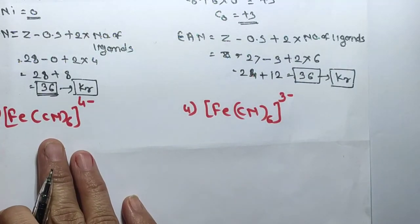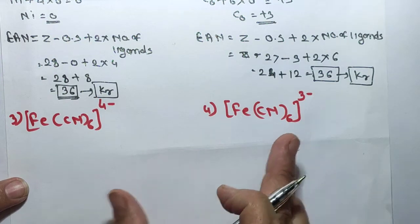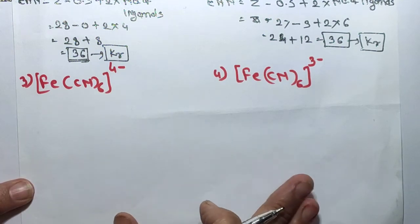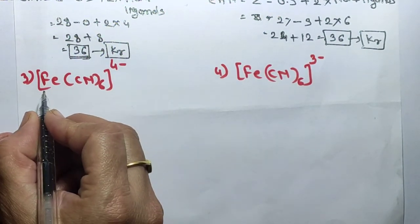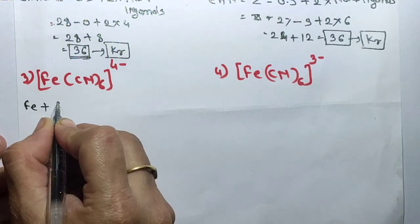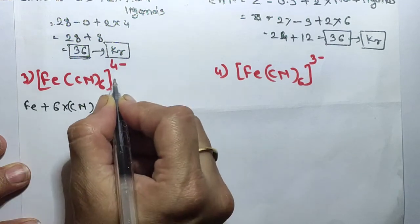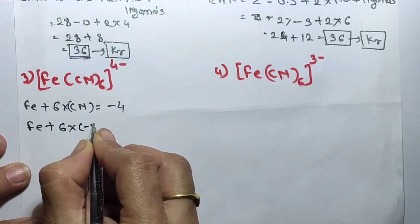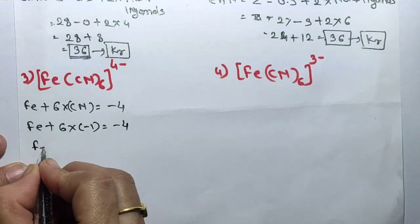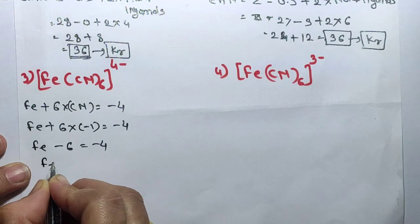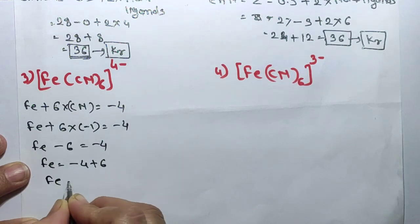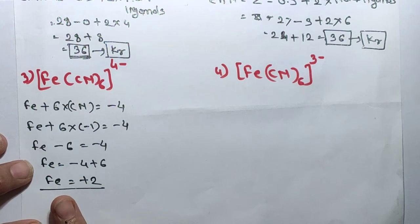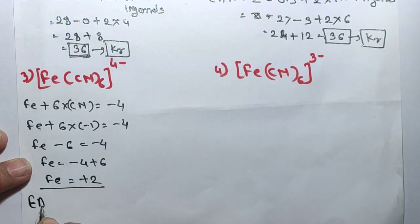Now let's solve Fe(CN)₆⁴⁻ and Fe(CN)₆³⁻ to determine which is more stable. For Fe(CN)₆⁴⁻, we find the oxidation state of iron: Fe plus 6 into cyanide's oxidation state of minus 1 equals minus 4. Therefore Fe minus 6 equals minus 4, so Fe equals minus 4 plus 6, giving iron an oxidation state of plus 2.